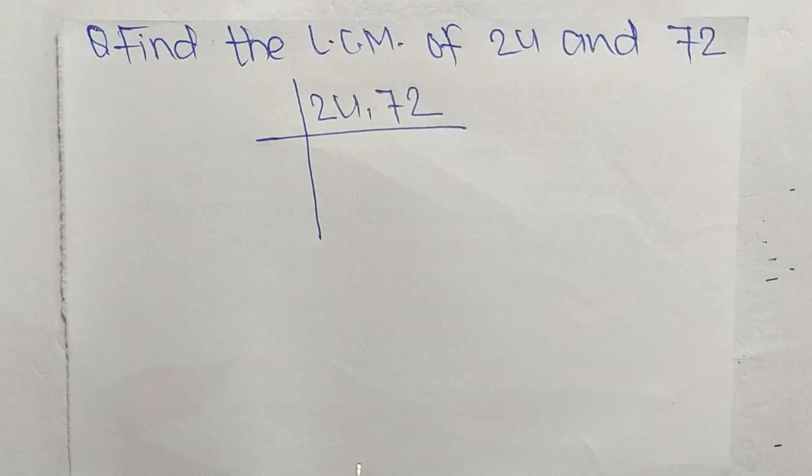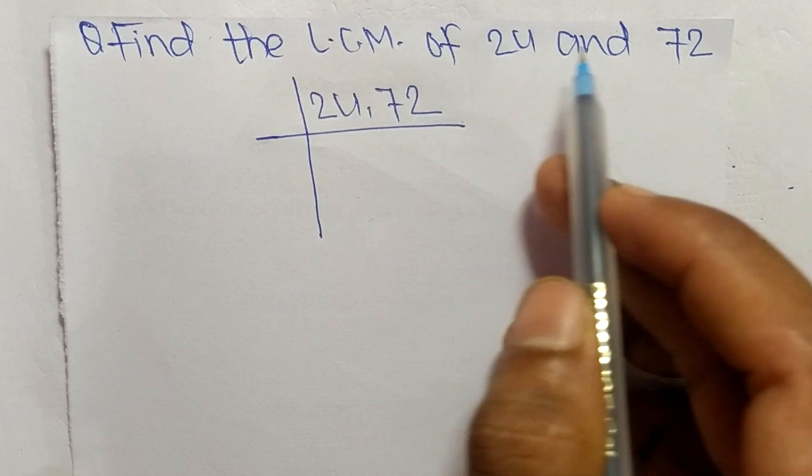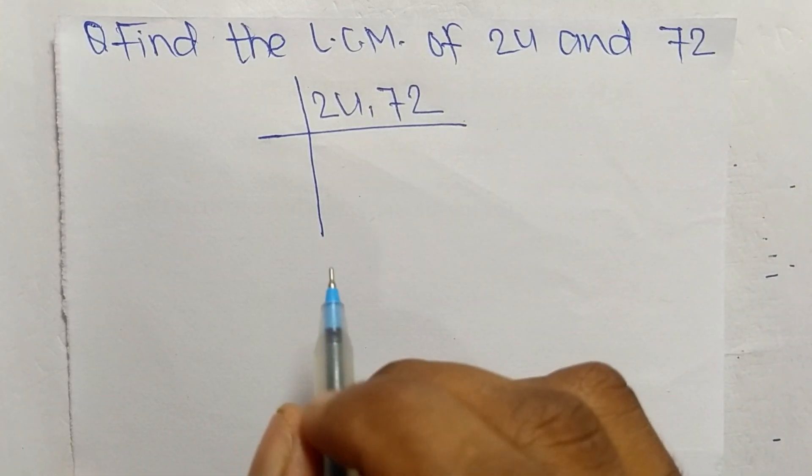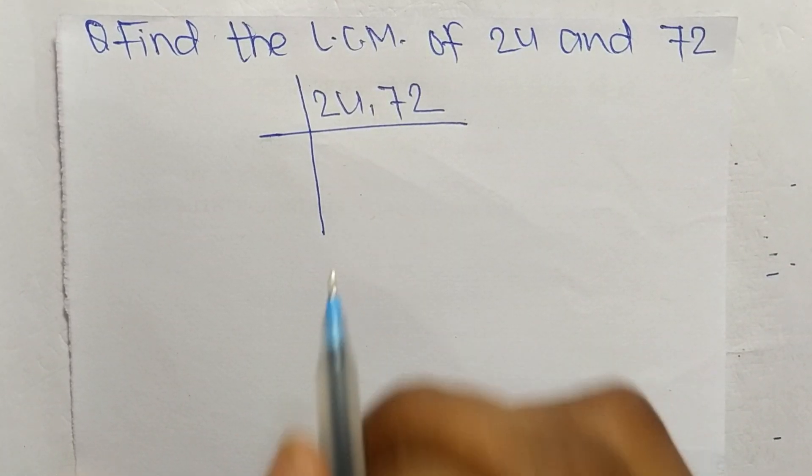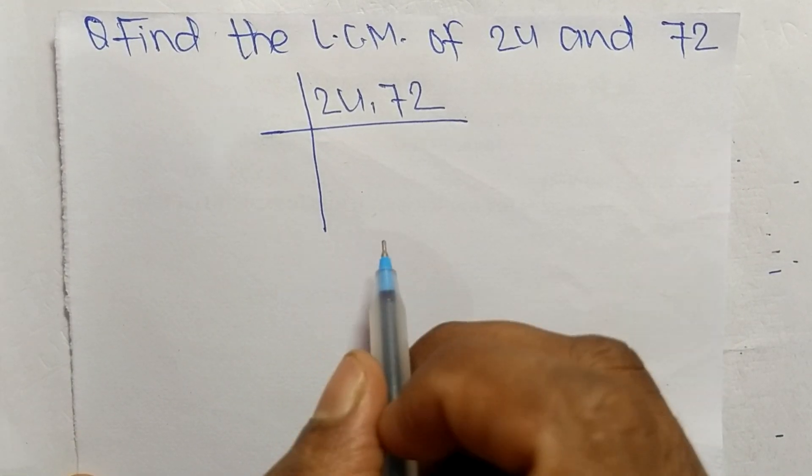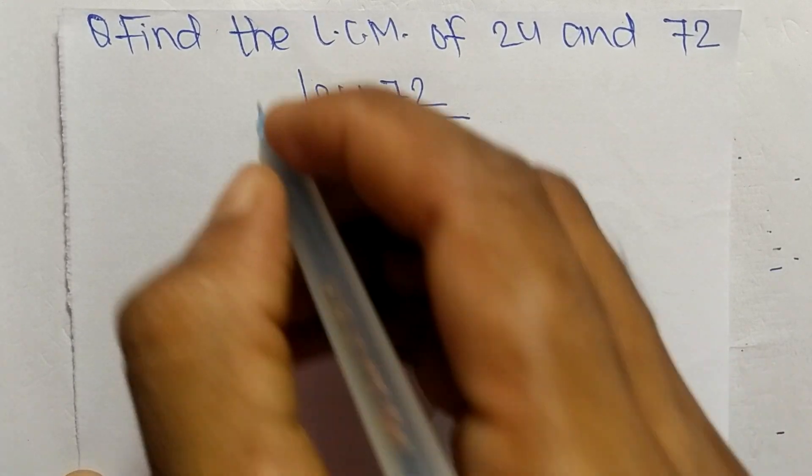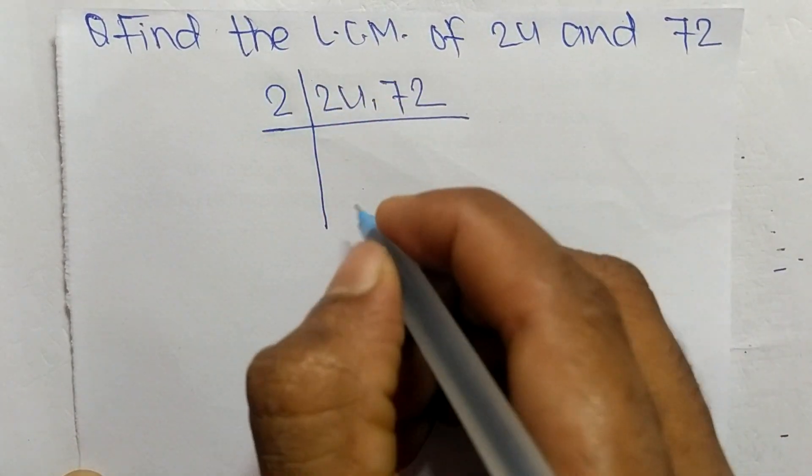So today in this video we shall learn to find the LCM of 24 and 72. To find LCM, first we choose the lowest number that can exactly divide 24 and 72. So the number is 2.